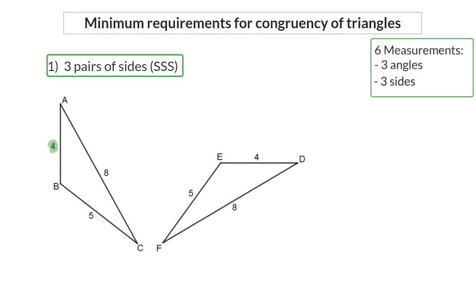In this example, we are given three pairs of corresponding sides that are equal in length. Because this is one of the minimum requirements for congruency, we can conclude that triangle ABC is congruent to triangle DEF. The reason is that we have three pairs of corresponding sides that are equal. Even though we were not given any information about the angles, we can now accept that angle A, which lies between the sides of 4 and 8 units, will be equal to angle D, which also lies between the 4 and 8 unit lengths.